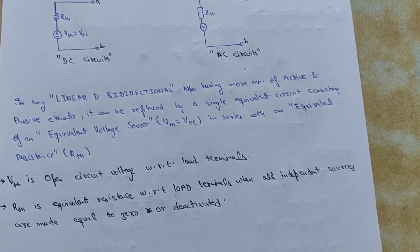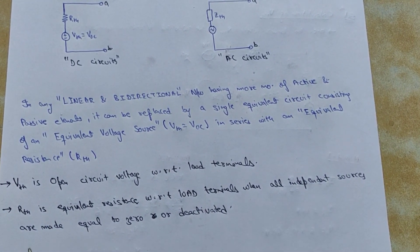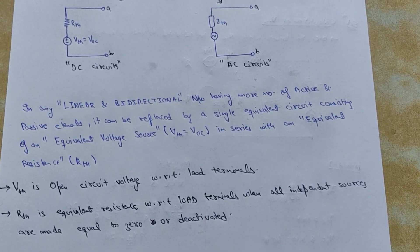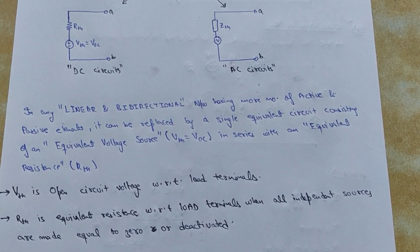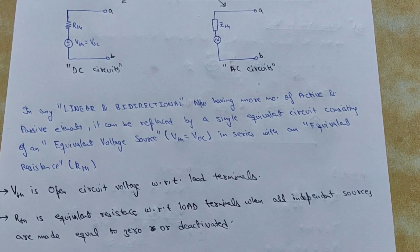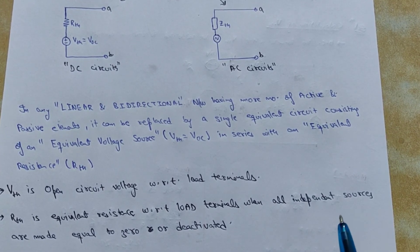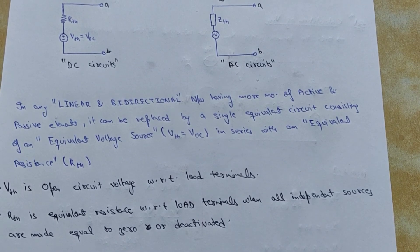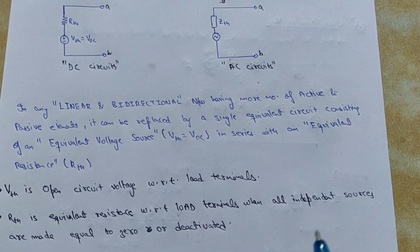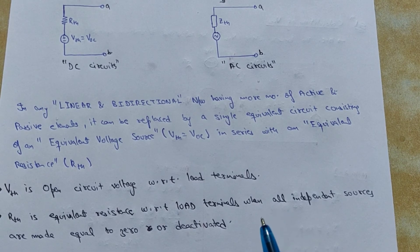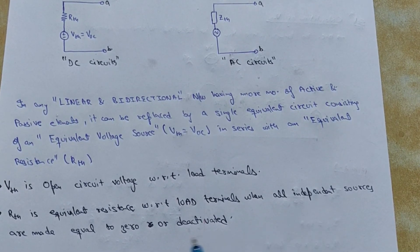What are independent sources? Independent voltage source or independent current source. Making them equal to zero means for an independent voltage source, V equals zero, and V equals zero when short circuited. Therefore, an independent voltage source is short circuited and an independent current source is open circuited, because if we open circuit the independent current source, the current through the branch becomes zero and the value of the independent current source becomes zero.